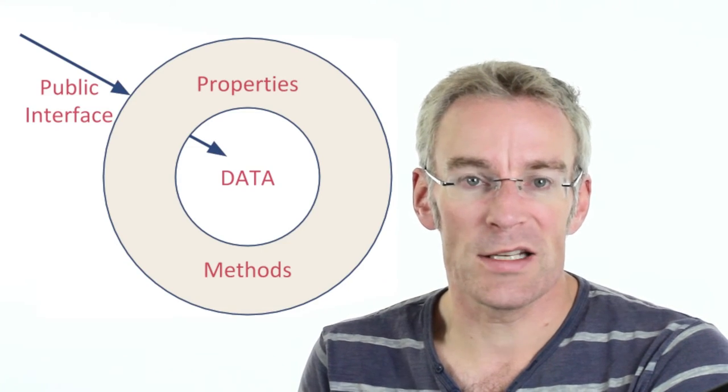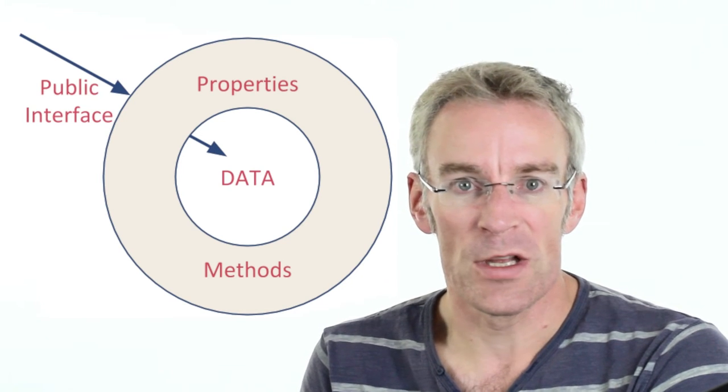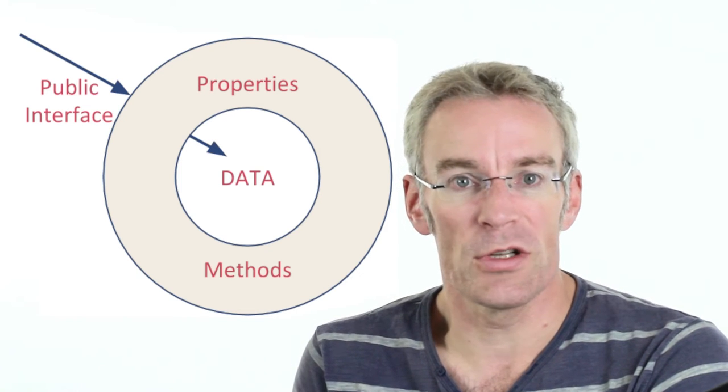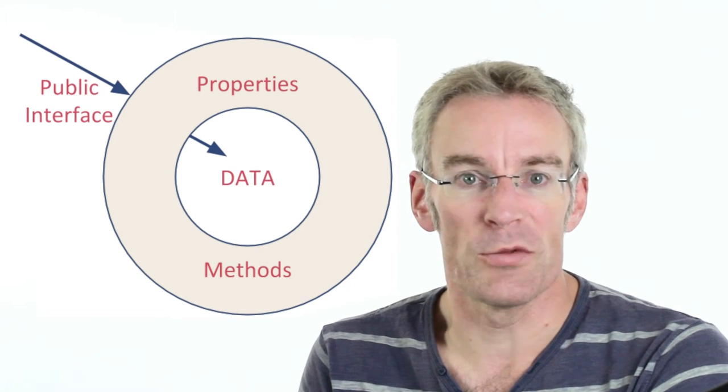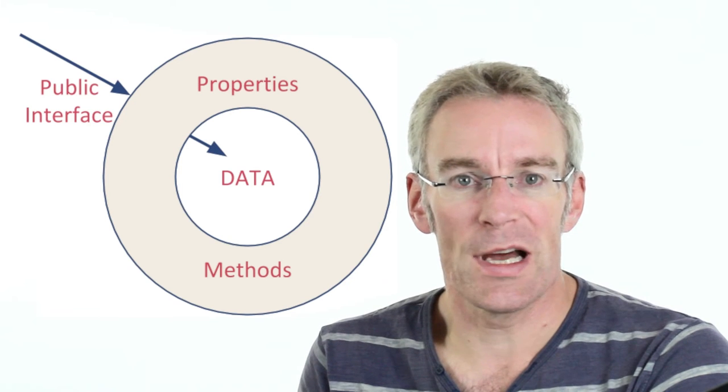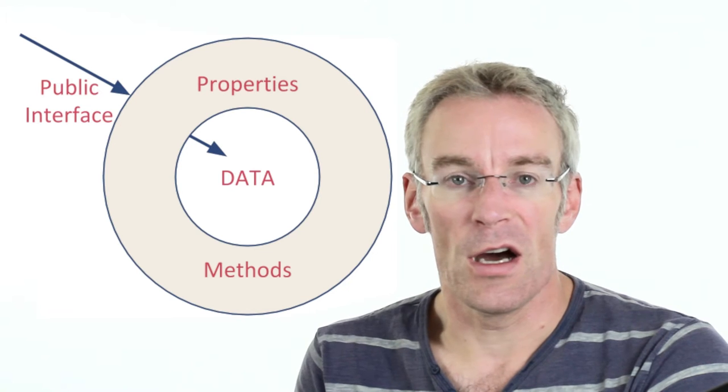One important feature of object-oriented programming is encapsulation, which means all the data required by the student object is stored inside the student object. It doesn't need any external data at all, and the data is protected from outside — you cannot access data directly in an object. You have an interface to access the data from outside. If you want to change the instance variables we can have properties, which come in two flavors: getter properties, which allow us to get a value from the object, and setter properties, which allow us to set or change the value of an instance variable.